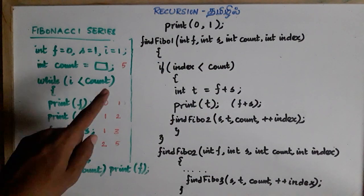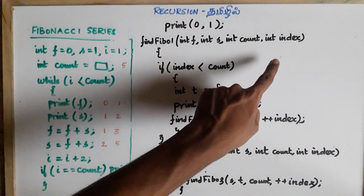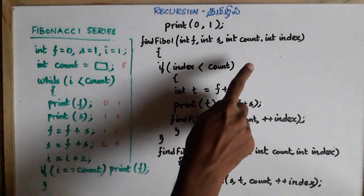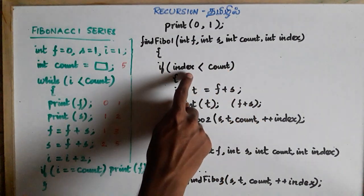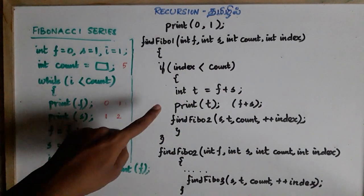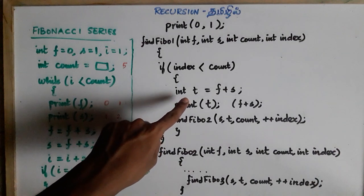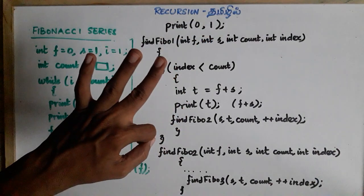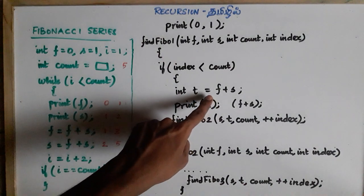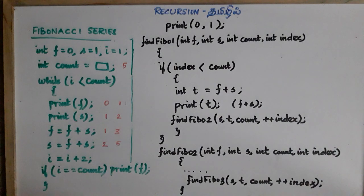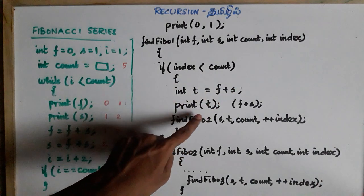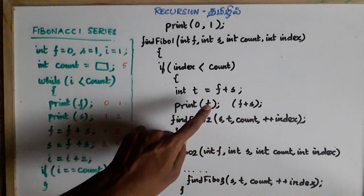The index value is 1. The count value is 5. The second value is 1, the third value is 1, and the second value is 3. The third value is T. The second value is F plus S. Now the value of F is 0 and S is 1. We add and print directly F plus S.